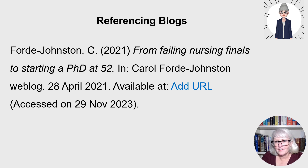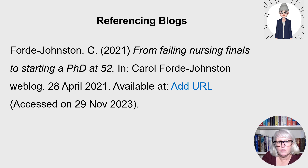For a blog reference, put the author's surname, the initial with a full stop, the year in brackets, then the title of the blog in italics with a full stop. Then write 'In:' followed by the name of the blog or website, a full stop, then the full date of publication — for example, 28 April 2021 — a full stop, then 'Available at:' with the URL, and then '(Accessed on:' with the date.